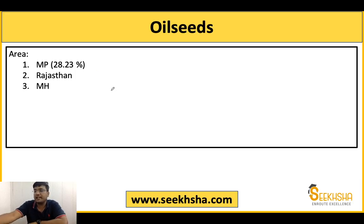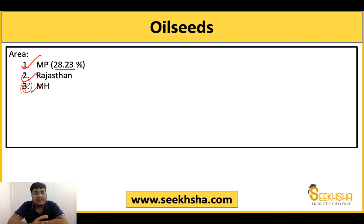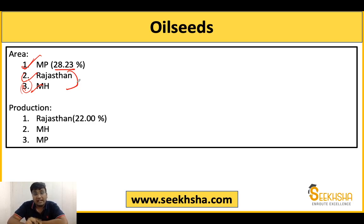Let's talk about the area under cultivation of oil seeds. Madhya Pradesh has the most area — around 28.23% — followed by Rajasthan and Maharashtra in 2nd and 3rd. As I mentioned in the last class, the 2nd and 3rd rankings are not very important. Questions tend to focus on the top position. The most area, the most production, and the most yield — I am repeating this key point.